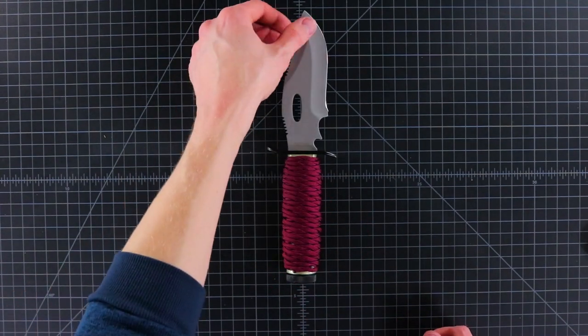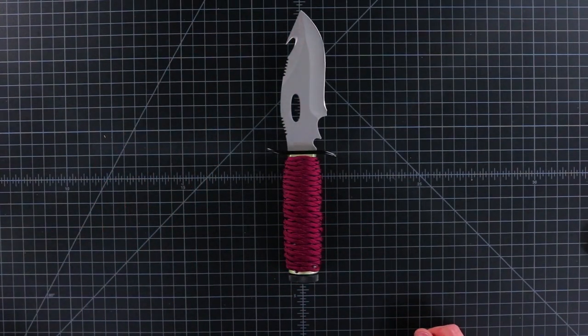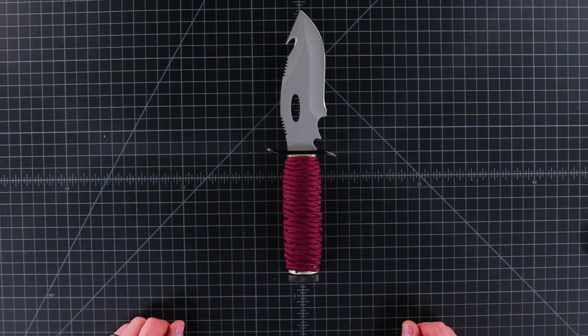This doesn't have to be used on knives. It's often used on like walking staves, or earlier this week we published a tutorial on the paracord germ bomb. You can check that out, we'll put a link in the description.